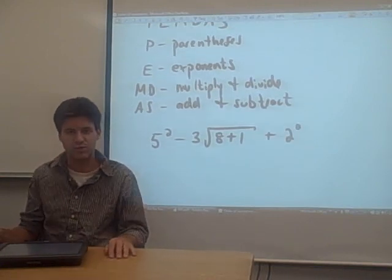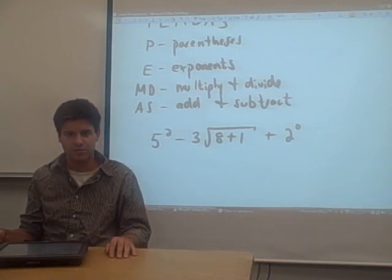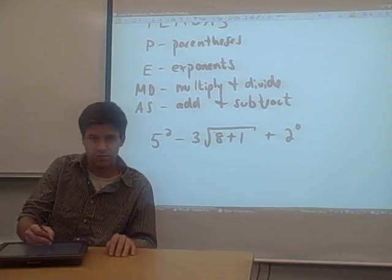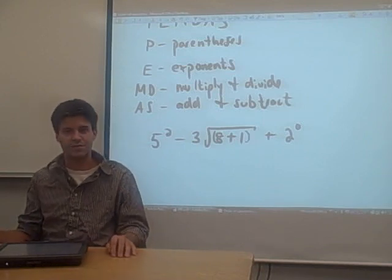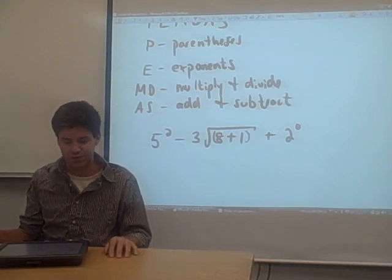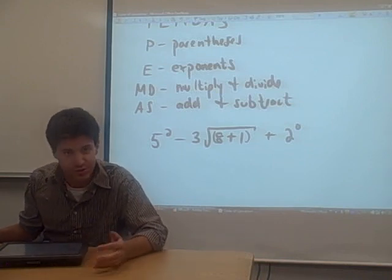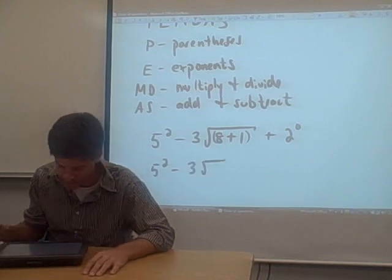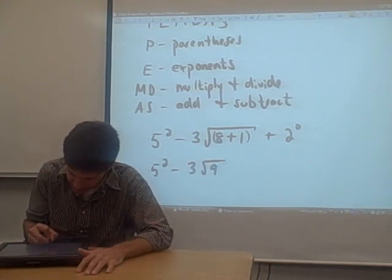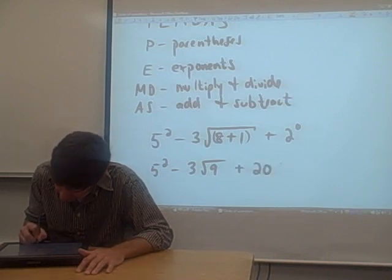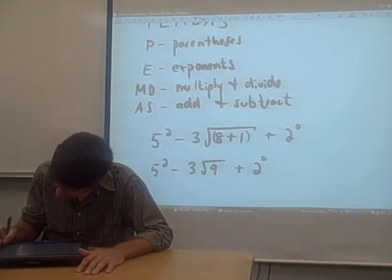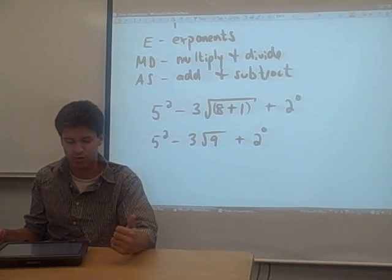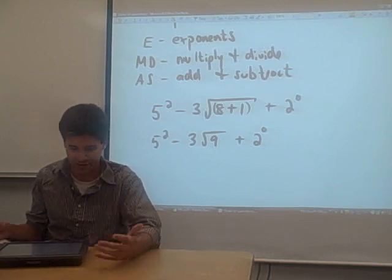If we have an expression like this and we want to simplify it, the first thing that we want to do is look for parentheses. The reason I picked this example is because anything under a square root actually does have hidden parentheses in it. So you want to simplify square roots in the parentheses section. So we should do that first. Five squared minus three square root. Now eight plus one equals nine, so I'm just going to change that into a nine, plus two to the zero. Now the square root of nine we know is three, so we may as well continue to simplify our square root in the parentheses section.